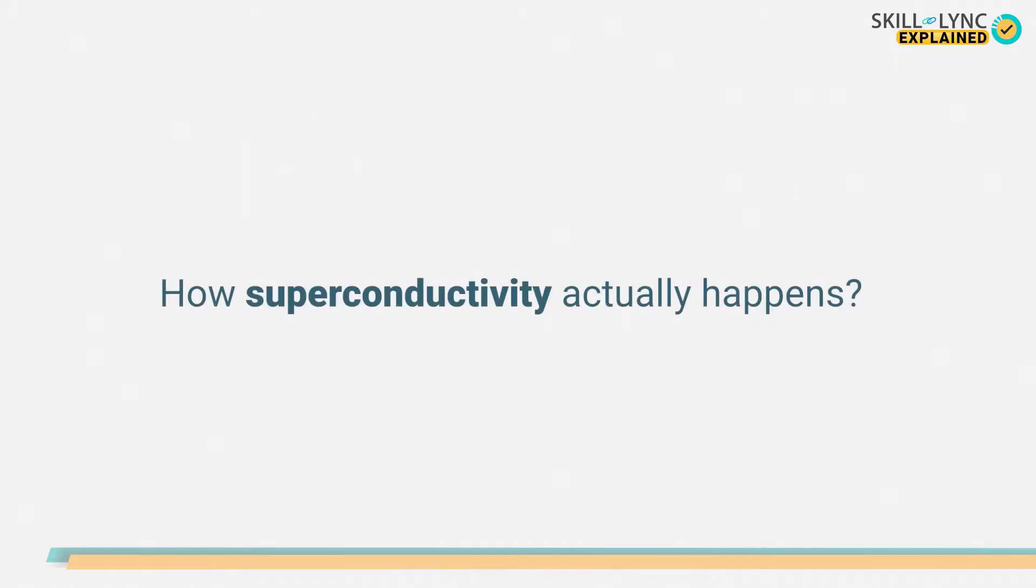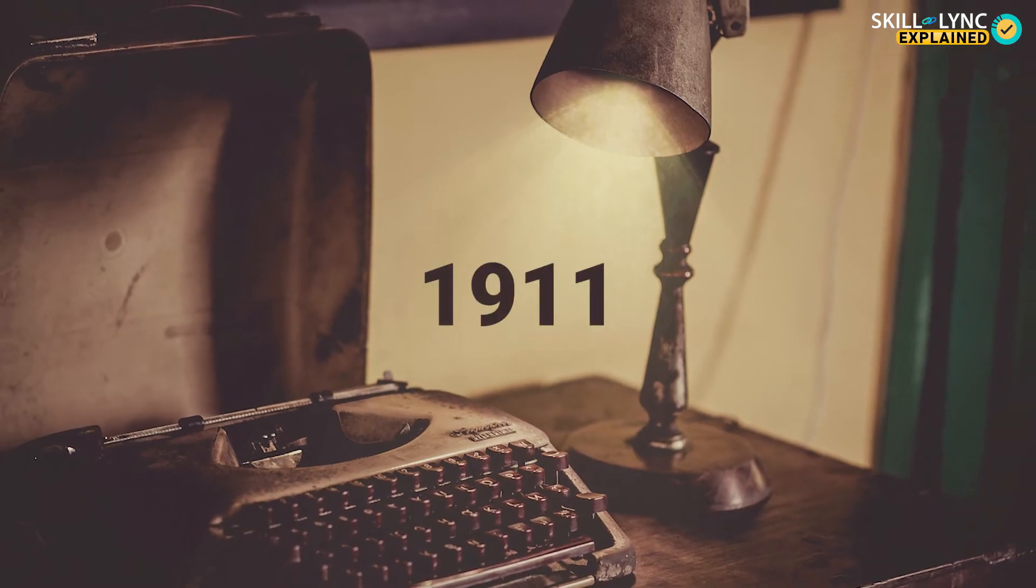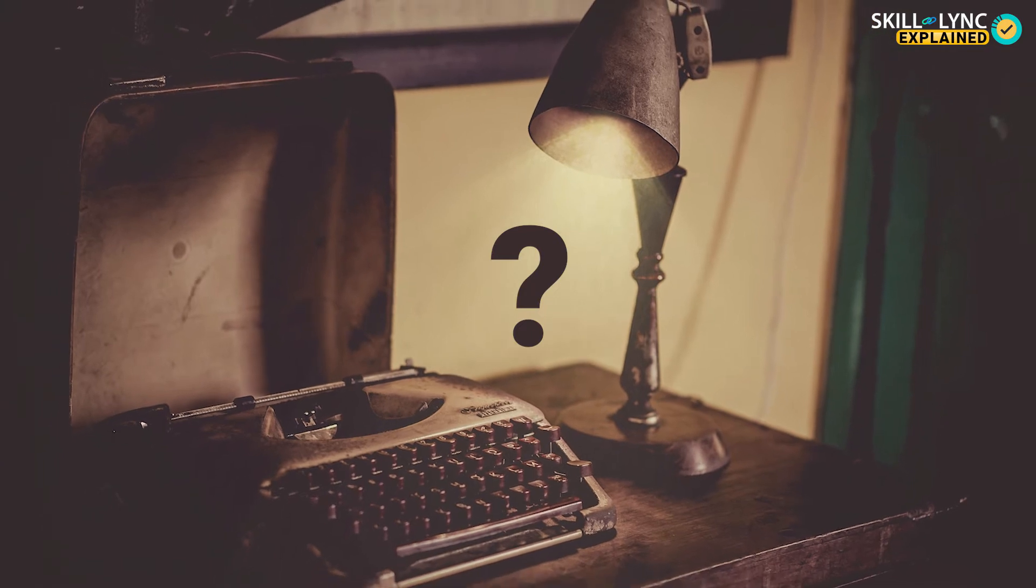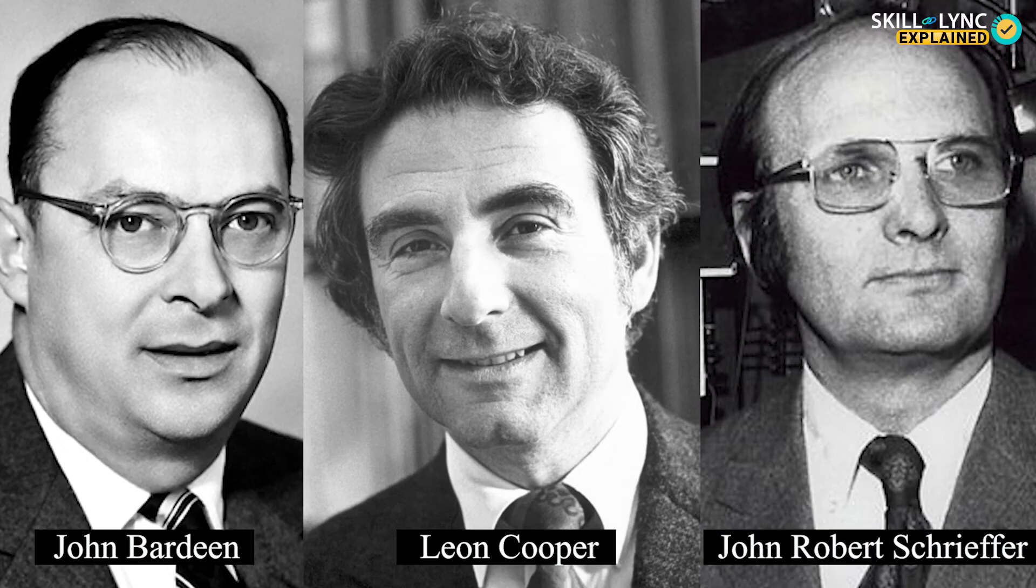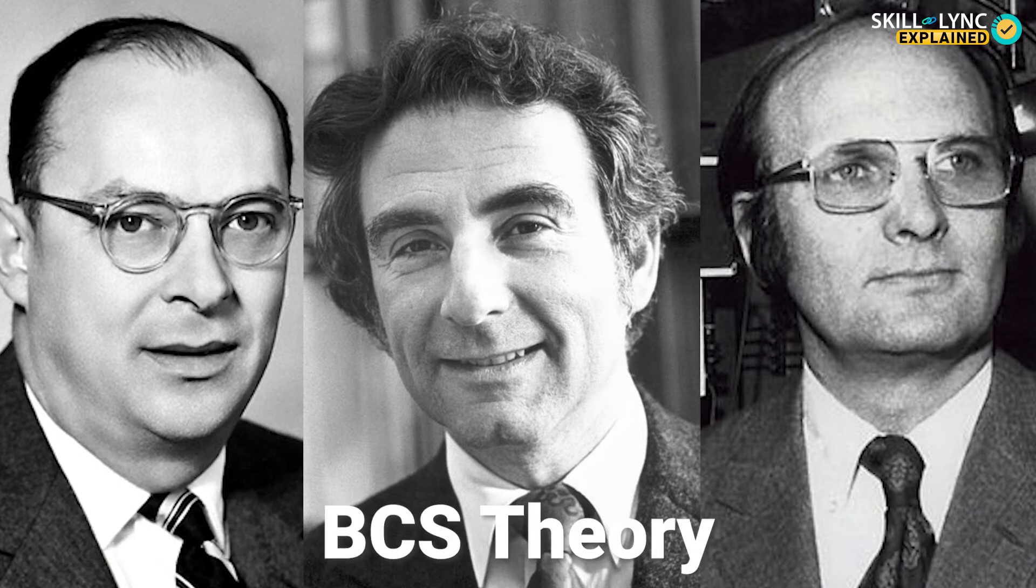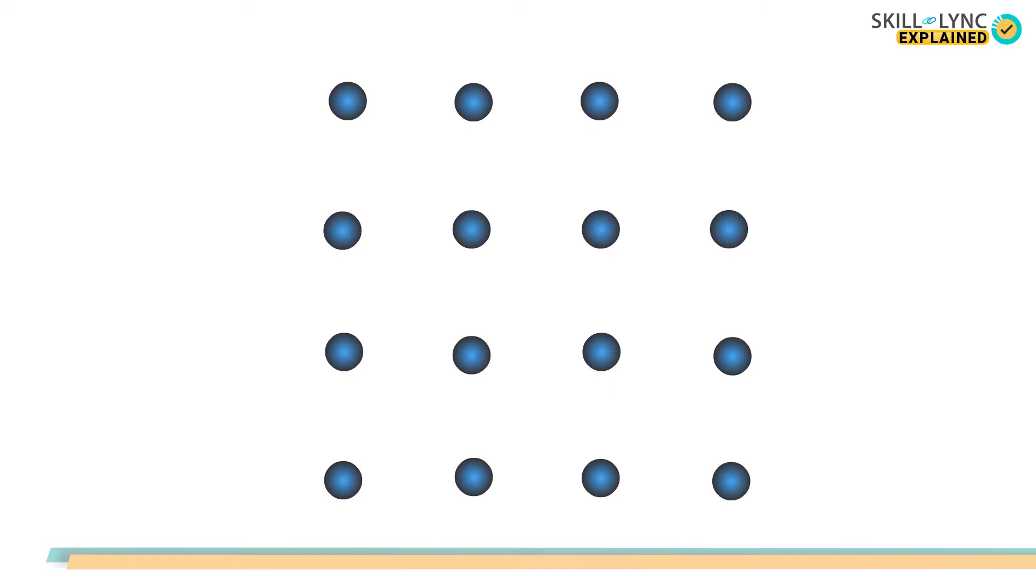Now let's see how superconductivity actually happens. Though the phenomenon was found in 1911, the reason behind that remained unknown for years. However, in 1957, three scientists named John Bardeen, Leon Cooper, and John Robert Schrieffer came up with a theory called BCS theory which explained the phenomenon of superconductivity.